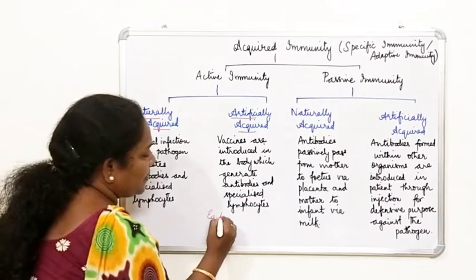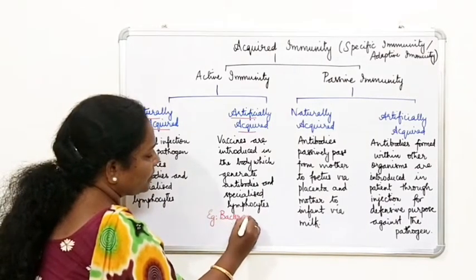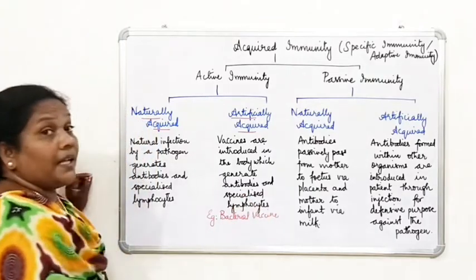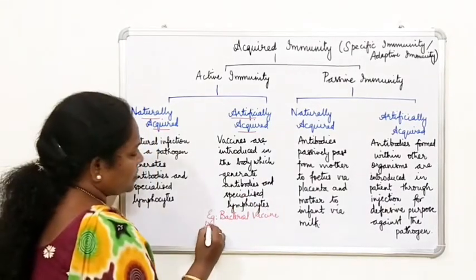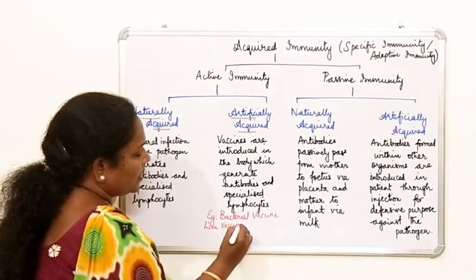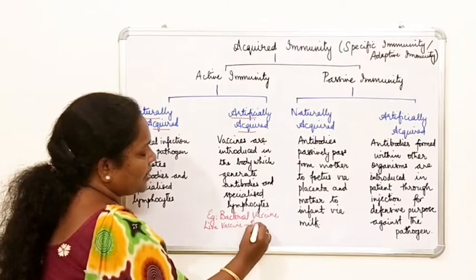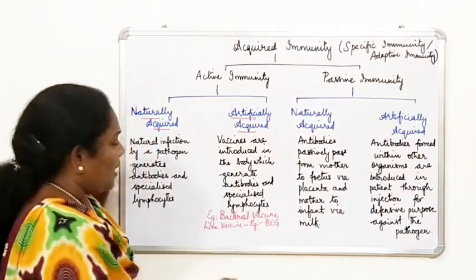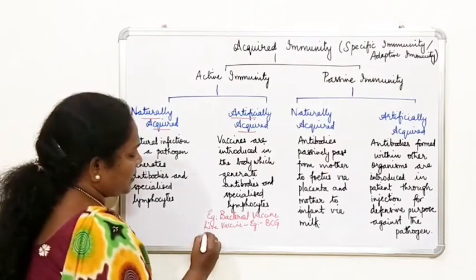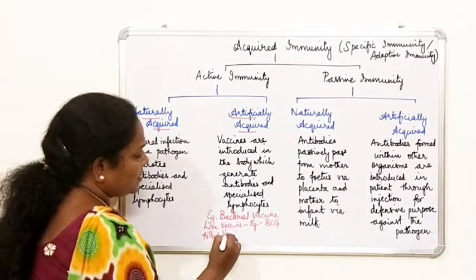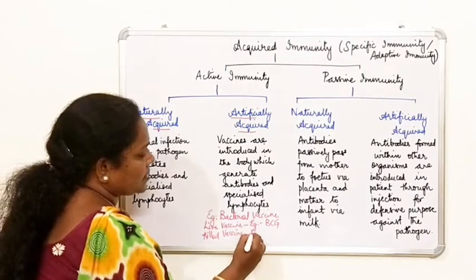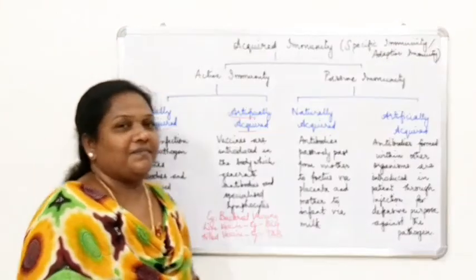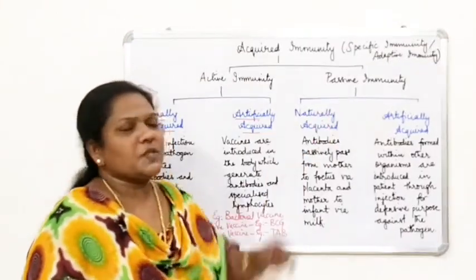An example of artificially active immunity is bacterial vaccines. There are live vaccines — for example, BCG, which is given against tuberculosis — and killed vaccines, a very good example being TAB, which is given against enteric fever.